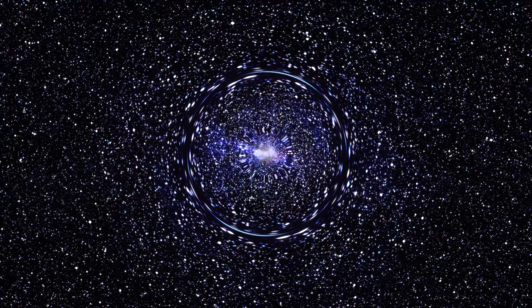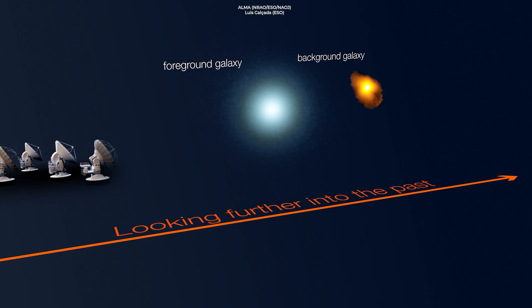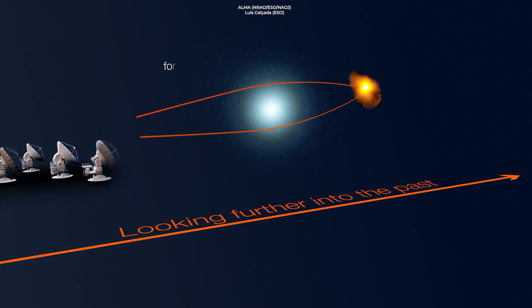But why Einstein ring? Well, that's because Albert Einstein. His theory of general relativity predicted that gravity could bend light. Not only did the light from the background galaxy get bent, but it also got magnified.